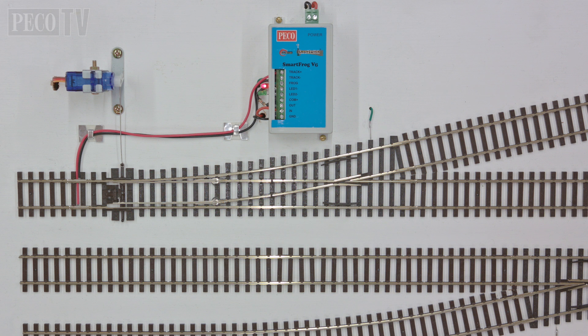Two smart frog units are required for items such as slips and crossings. A single PL 202 power supply unit provides enough voltage and power for multiple smart frog devices.